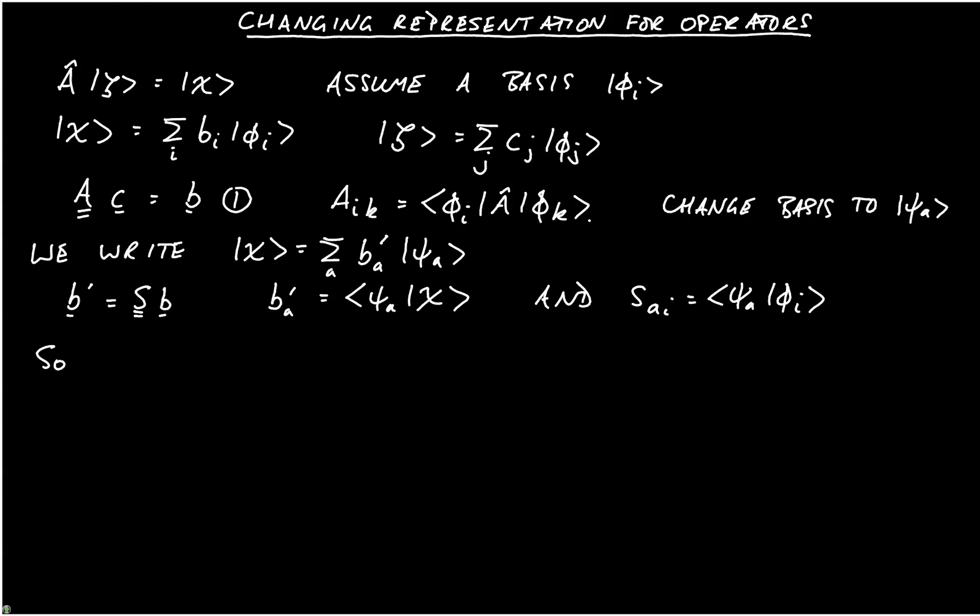So if we chose to, we could write bra psi_A ket chi is equal to the sum over i of psi_A phi_i, phi_i chi. And this first term is the matrix element S_Ai, and the second term is the matrix element b_i.